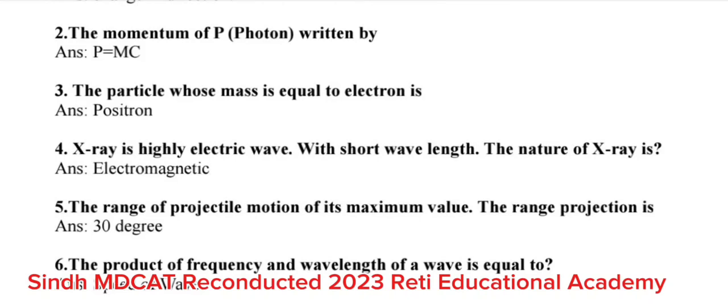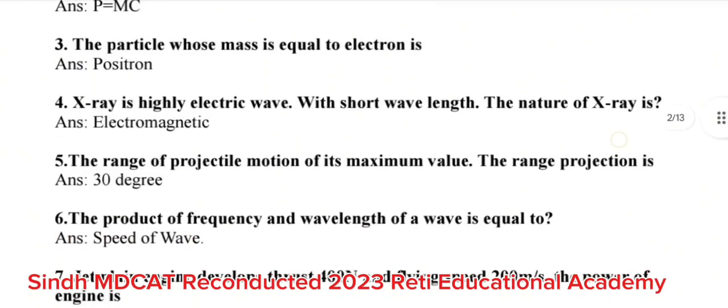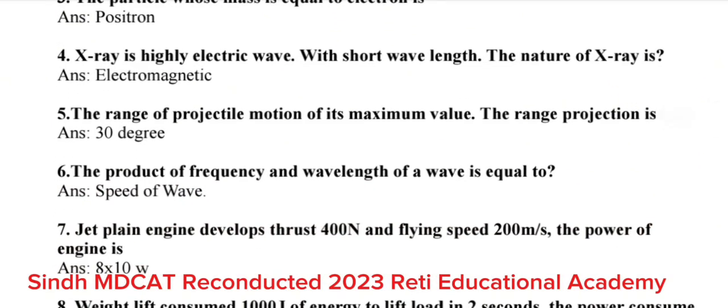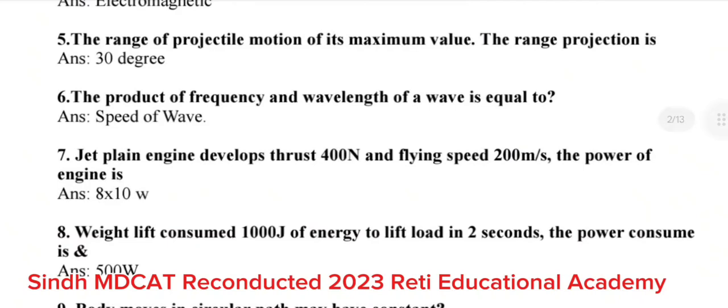Question number 5: The range of projectile motion of its maximum value. The range projection is? The correct answer is 30 degree. Question number 6: The product of frequency and wavelength of wave is equal to? The correct answer is speed of wave. Question number 7: Jet plane engine develops thrust 400 N and flying speed 200 m per second. The power of engine is? The correct answer is 8 into 10 watt.